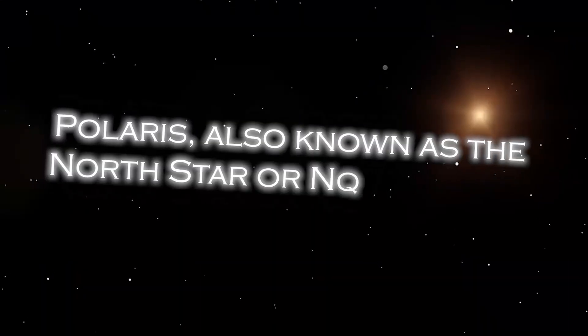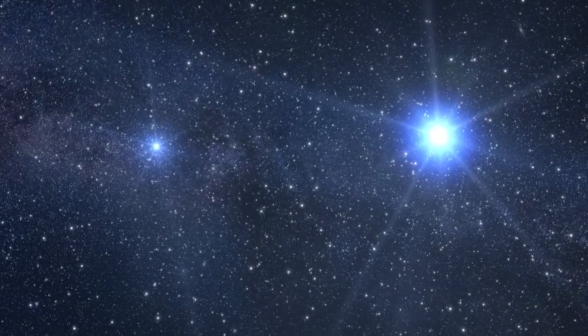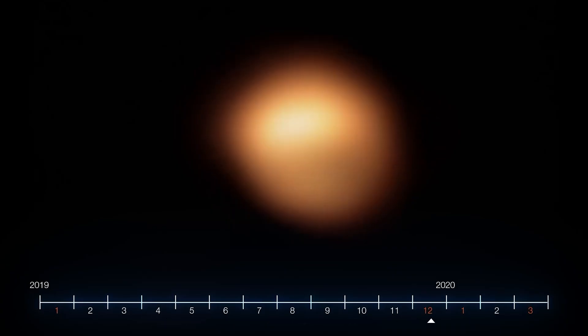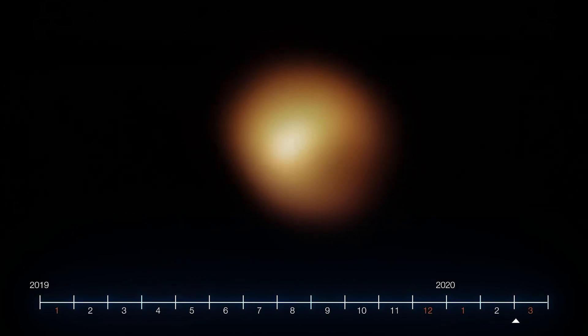Polaris, also known as the North Star, occupies a special position in the sky because of its proximity to the celestial North Pole. It is almost directly over the Earth's North Pole, which gives the illusion that it remains static in the northern sky.